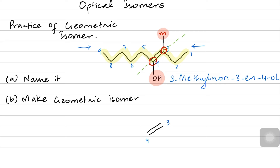Now when you talk about geometrical isomers, notice the double bond and redraw it. I would recommend flipping the easier side. For me, carbon 4 is more difficult, so I am redrawing the exact carbon 4 with OH at the bottom and the long carbon chain on the left.